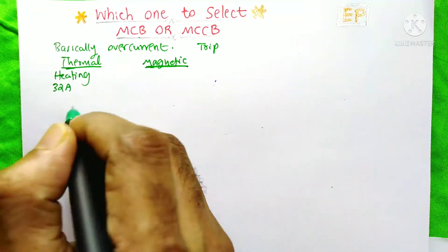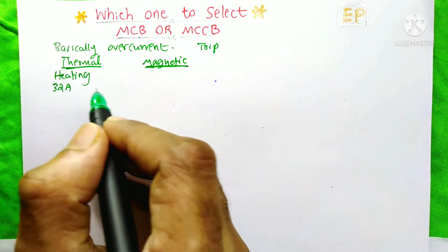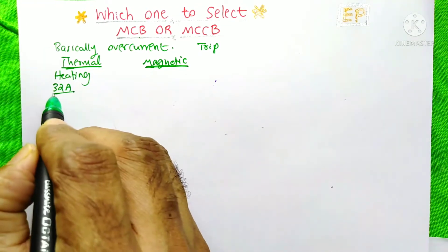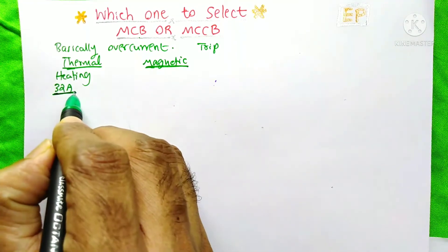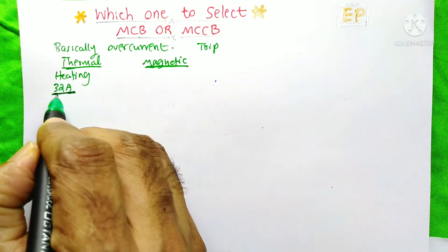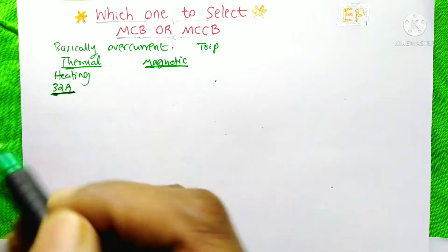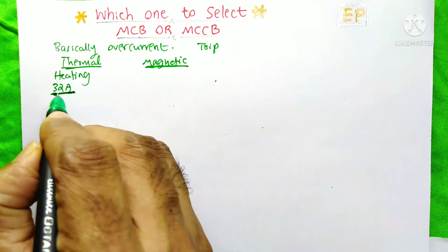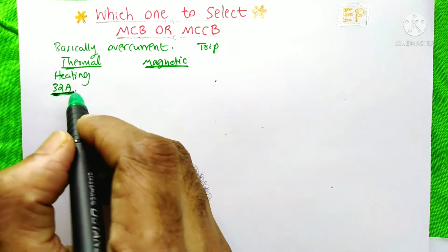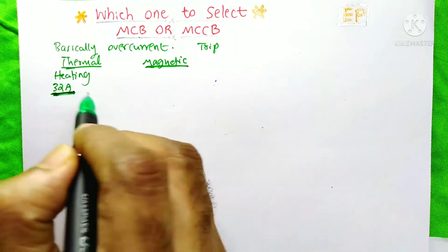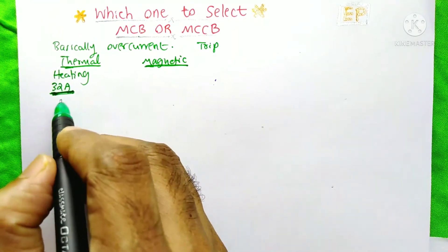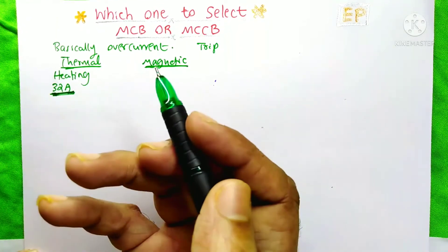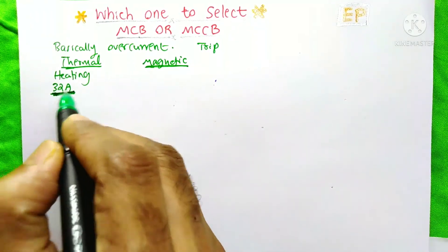After a specific time, the bimetallic strip will bend and the circuit will open, protecting the circuit. Even when the circuit current equals the rated 32 amperes, after a long period — maybe 30 to 45 minutes — the bimetallic strip will bend and break the circuit. Whenever the current is more, the tripping time will be less; whenever the current is less, the tripping time will be more.